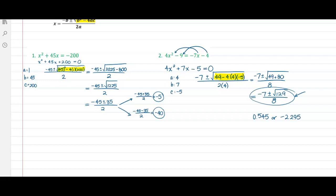In the second example, the discriminant was not a perfect square. It was 129. We got two irrational real solutions that we had to round in order to use.